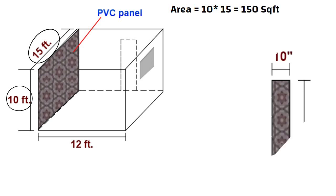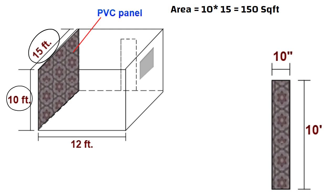The standard size of a PVC panel sheet available in the market is 10 inches by 10 feet. Now we will calculate how many PVC panel sheets shall be required for this 10 feet by 15 feet wall.